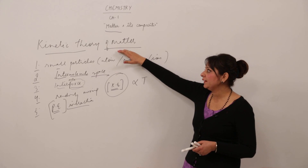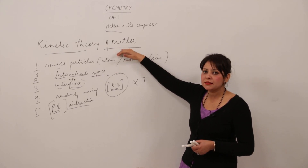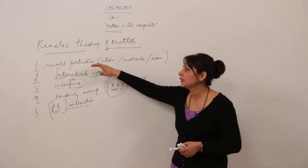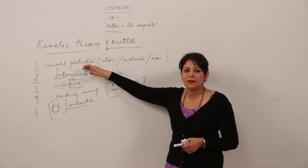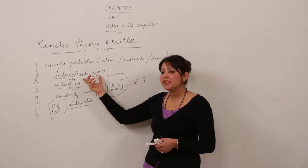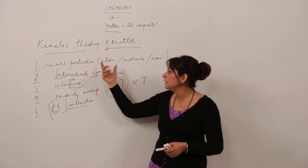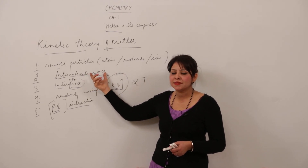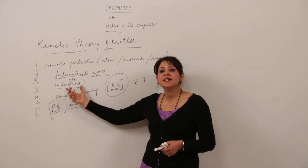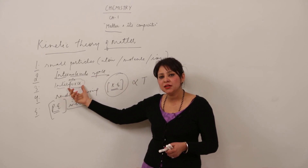Kinetic theory of matter explains many things about matter. First, it explains what matter consists of — small particles: atom, molecule, or ion. There is always a space between the molecules present in matter called intermolecular space, which can range from low to maximum. There is also a certain kind of attractive force that exists between the particles of matter.